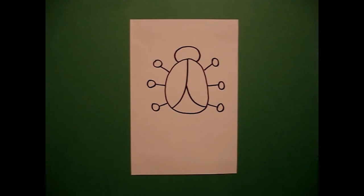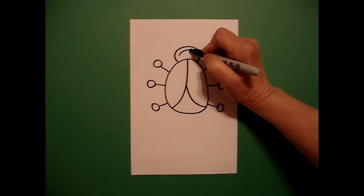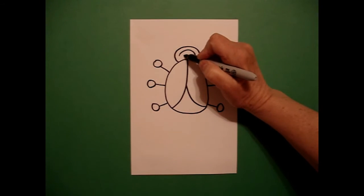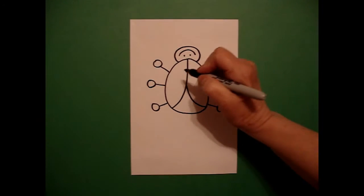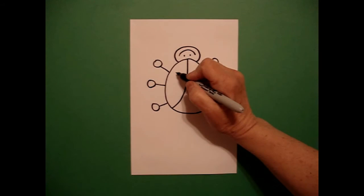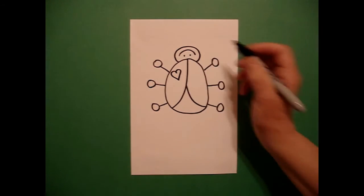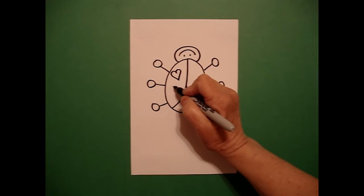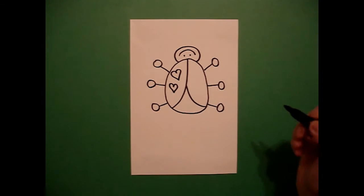I come back up and I draw a curve line and one dot, two dots. Now to make my hearts, I put a dot and I draw a curve line out, up, connect. Put a dot, curve line out, up, connect.